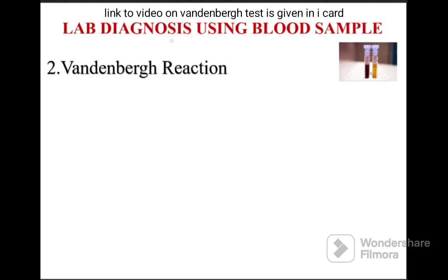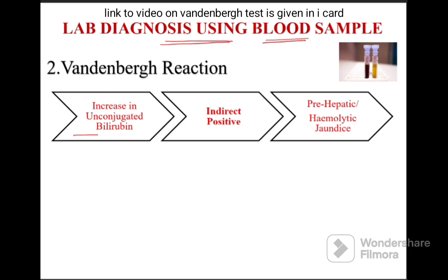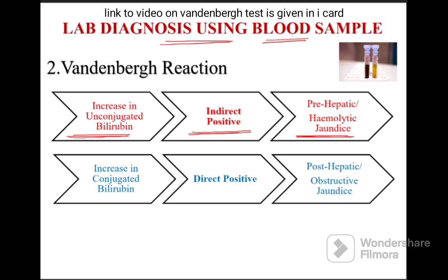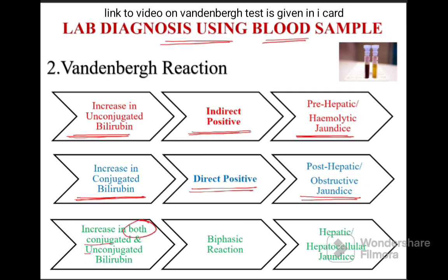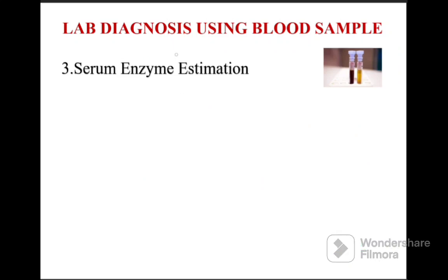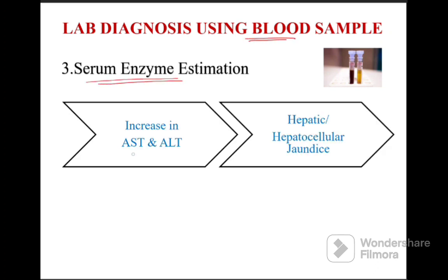Van den Bergh reaction — another test used for diagnosing jaundice using the blood sample. If there is an increase in unconjugated bilirubin, the Van den Bergh test will be indirect positive, indicating pre-hepatic or hemolytic jaundice. If there is an increase in only conjugated bilirubin, the test will be direct positive, indicating post-hepatic or obstructive jaundice. If both are increased, the test will be biphasic positive, indicating hepatic or hepatocellular jaundice.